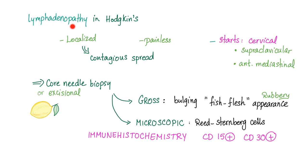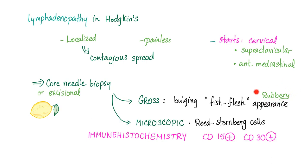Lymphadenopathy in Hodgkin's lymphoma is localized, painless, and spreads contiguously. It usually starts in the cervical lymph nodes; supraclavicular and mediastinal nodes can also be involved. Core needle biopsy or excisional biopsy is needed to examine the lymph node. On gross examination there is bulging of the lymph node — called the fish-flesh appearance — and it is very rubbery in consistency.